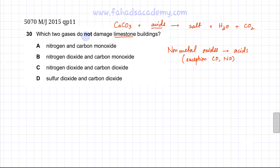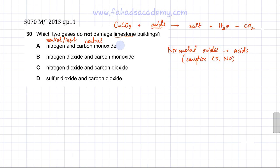Carbon monoxide is not going to react with calcium carbonate. Nitrogen is also neutral — it's inert and hardly reacts with anything, so it's not going to react with calcium carbonate either. So option A looks perfectly correct — it contains two gases that are not going to react with limestone buildings.